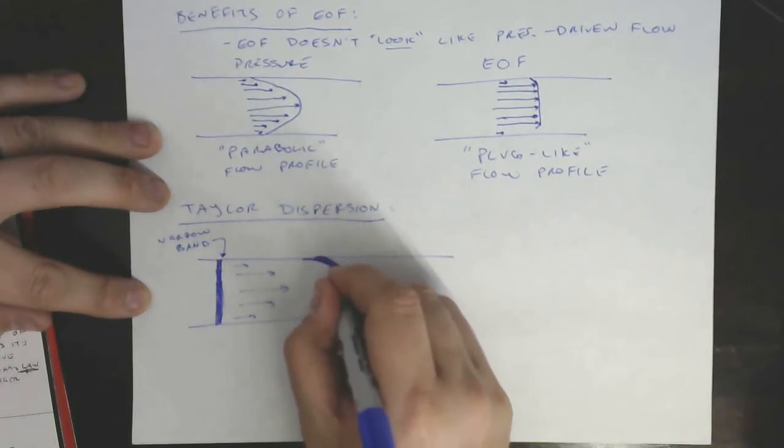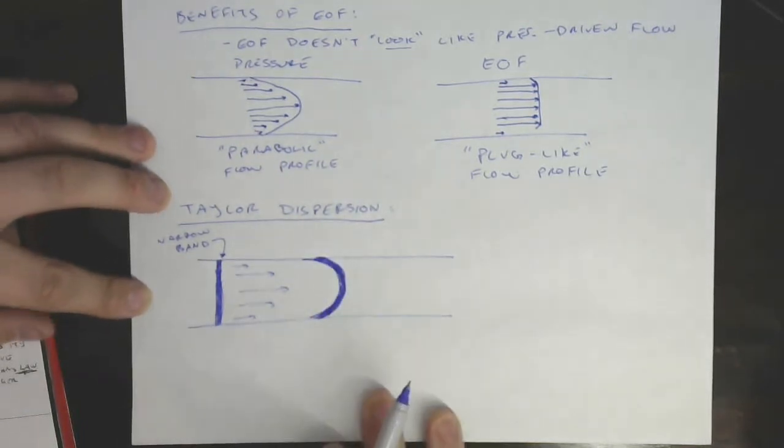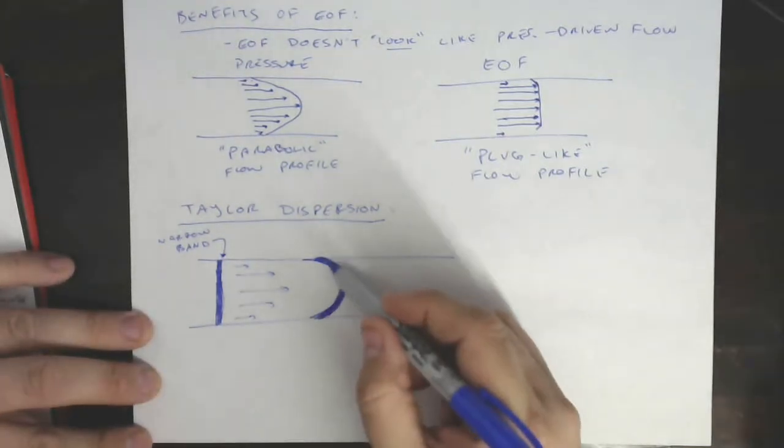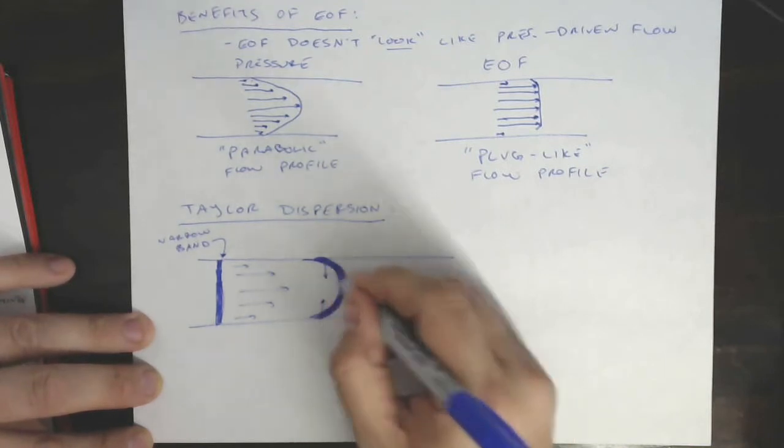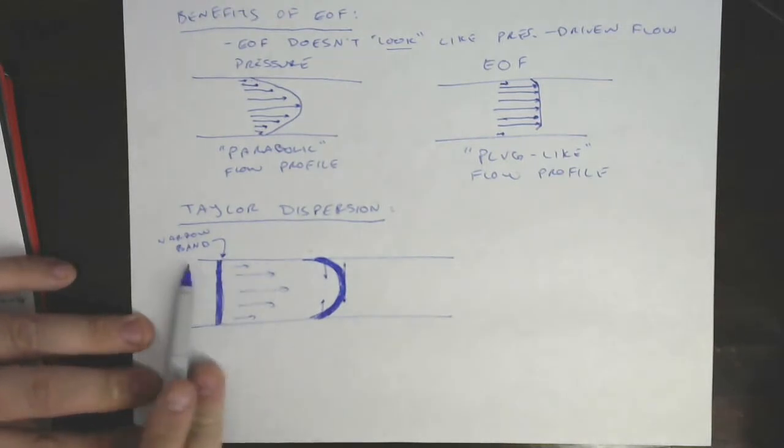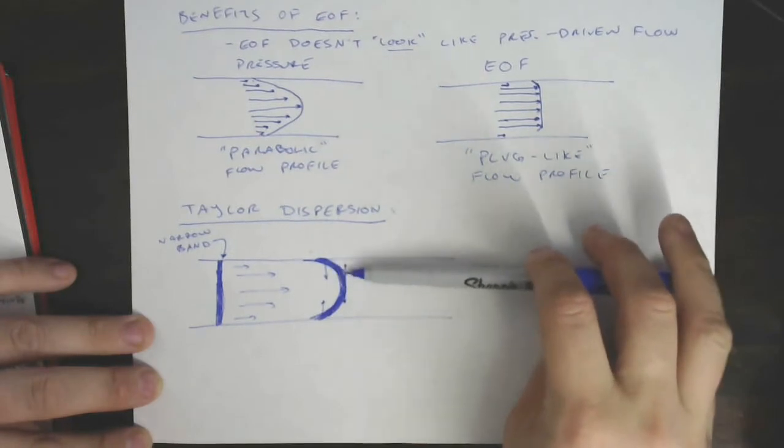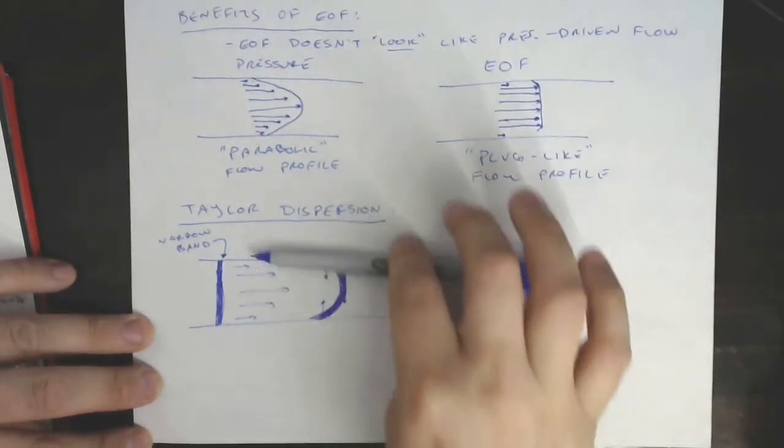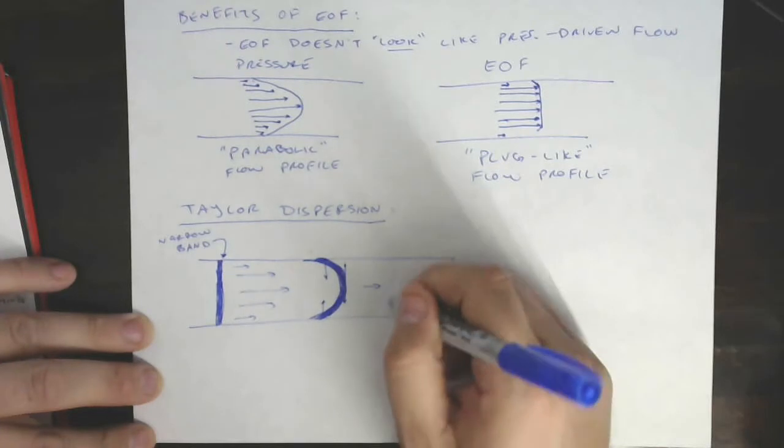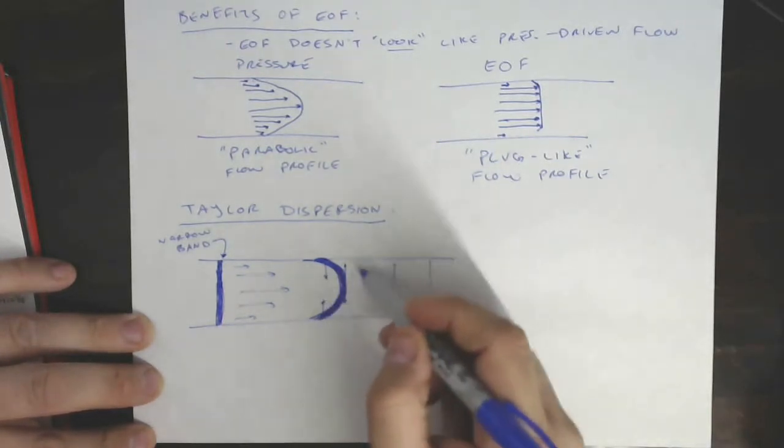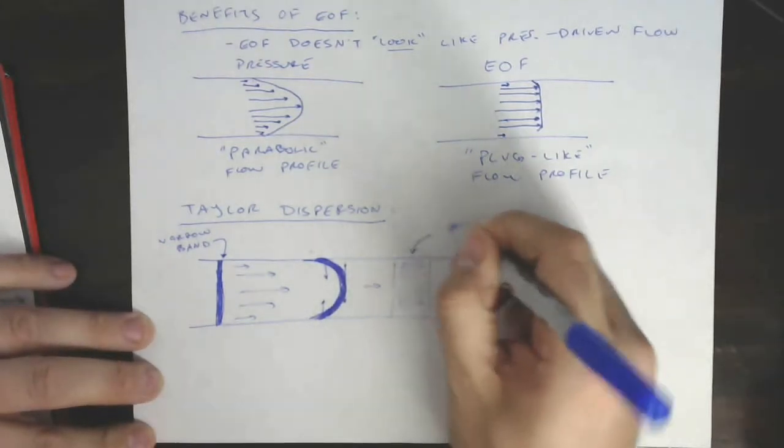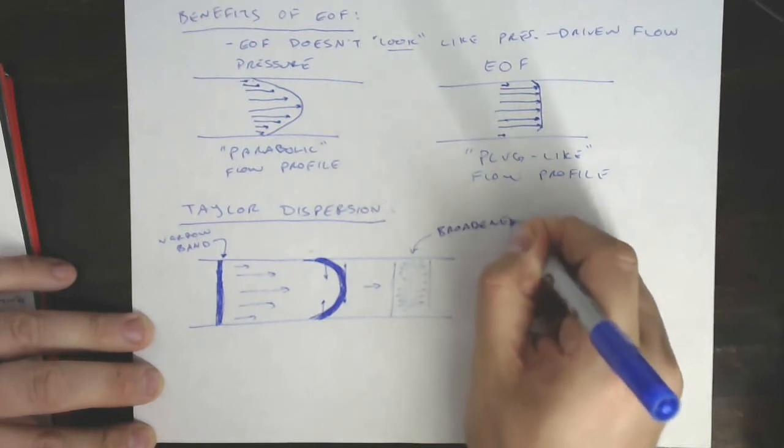And the reason this is not exactly what we get is because, as we learned when we talked about diffusion, we learned that diffusion proceeds across concentration gradients. So this is where all of our sample is. There's a concentration gradient going in that direction, in that direction, another one going in that direction, in that direction. So while we've talked a lot about longitudinal diffusion, that's in this dimension, these concentration gradients lead to what we call radial diffusion in this direction here. And so what that actually gives is not this exaggerated band.